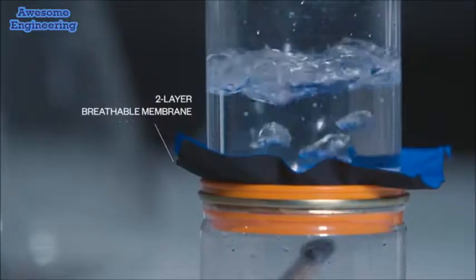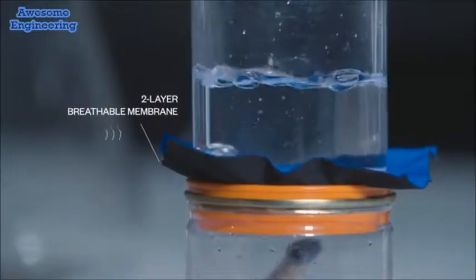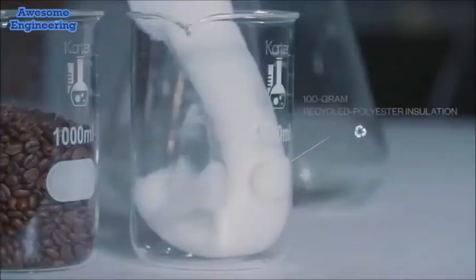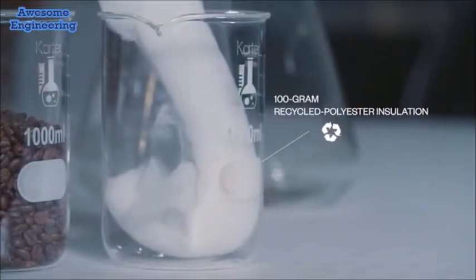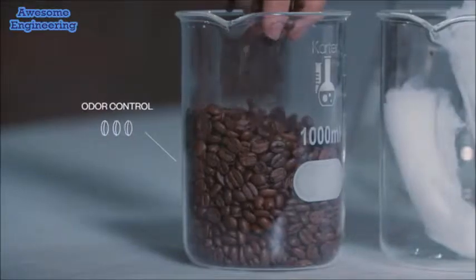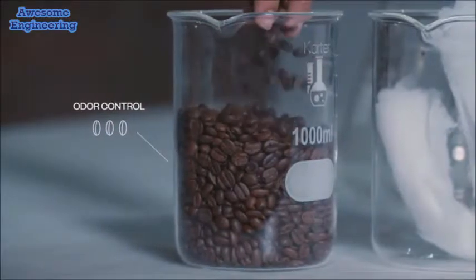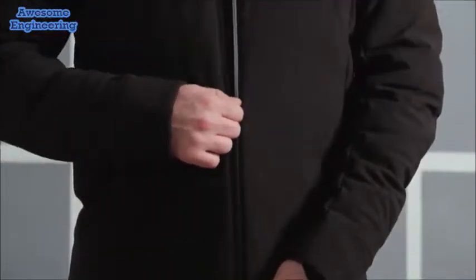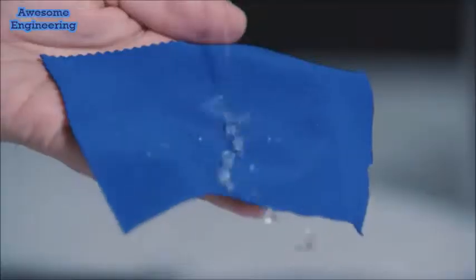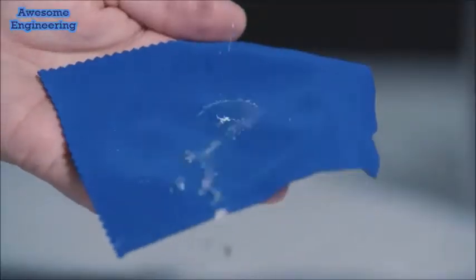It has a two-layer waterproof breathable membrane. It allows your vapors to pass through, but not rain droplets. It has 100-gram recycled polyester insulation, which actually provides a little bit of odor control because it has coffee grounds embedded in it. There's also a very low-profile waterproof zipper, as well as a durable water repellent to keep the jacket dry.